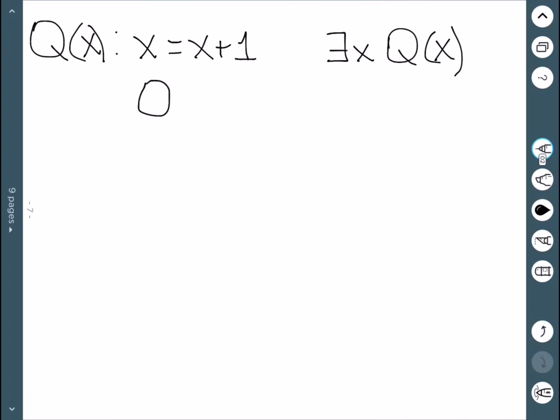Here, if I subtract x from both sides, I'm left with 0 = 1, which is false. So this is false—there is no number that remains unchanged when you add 1 to it.